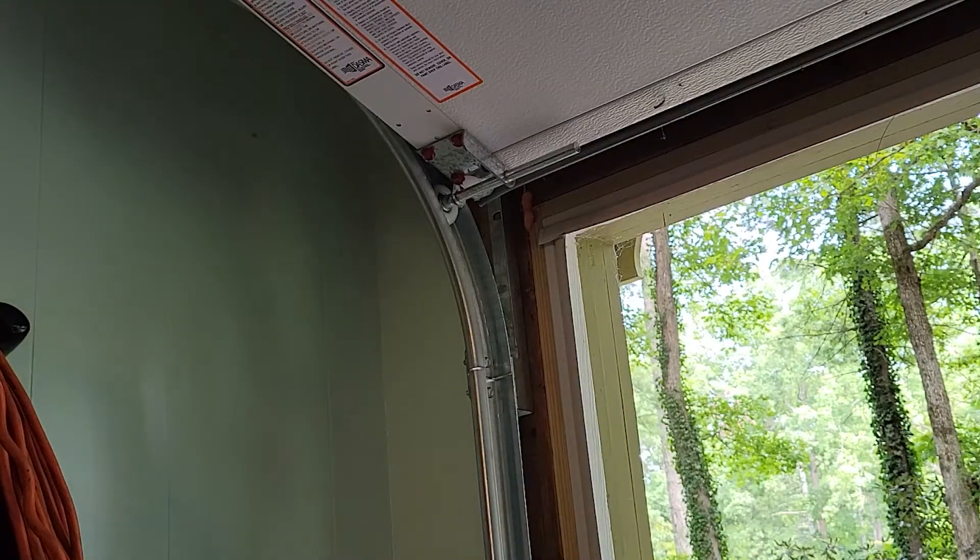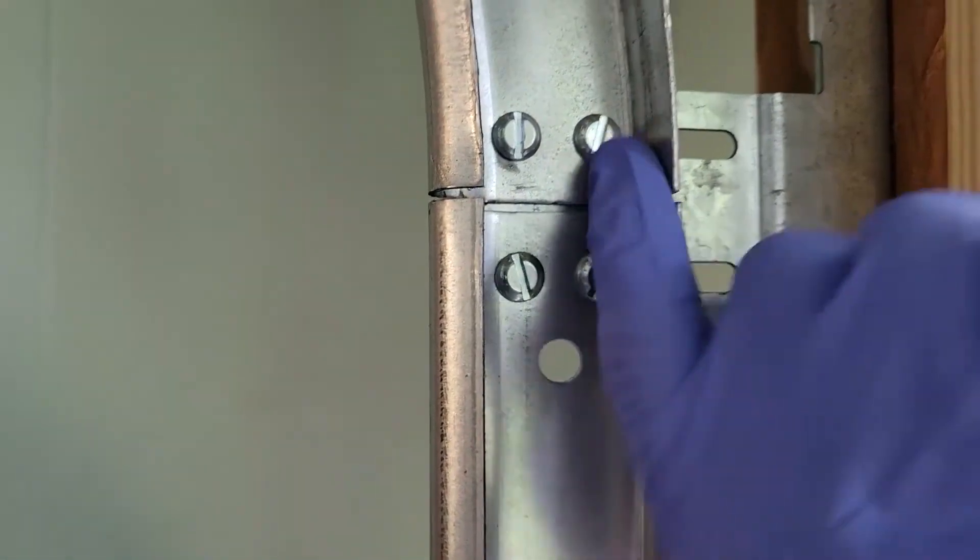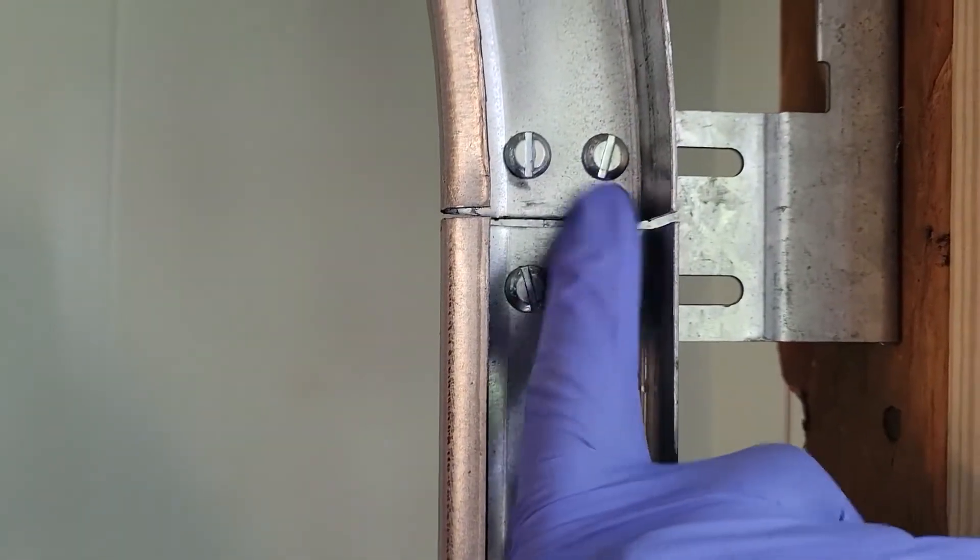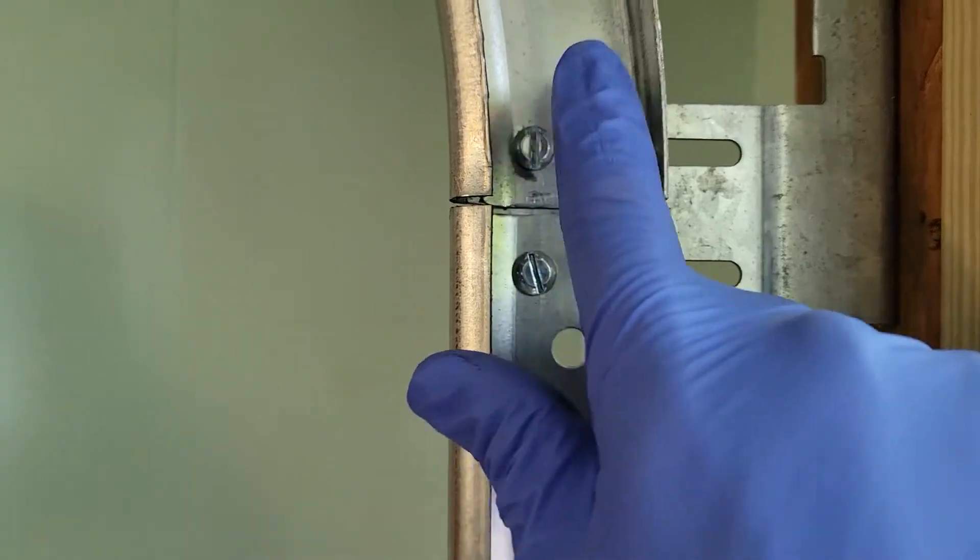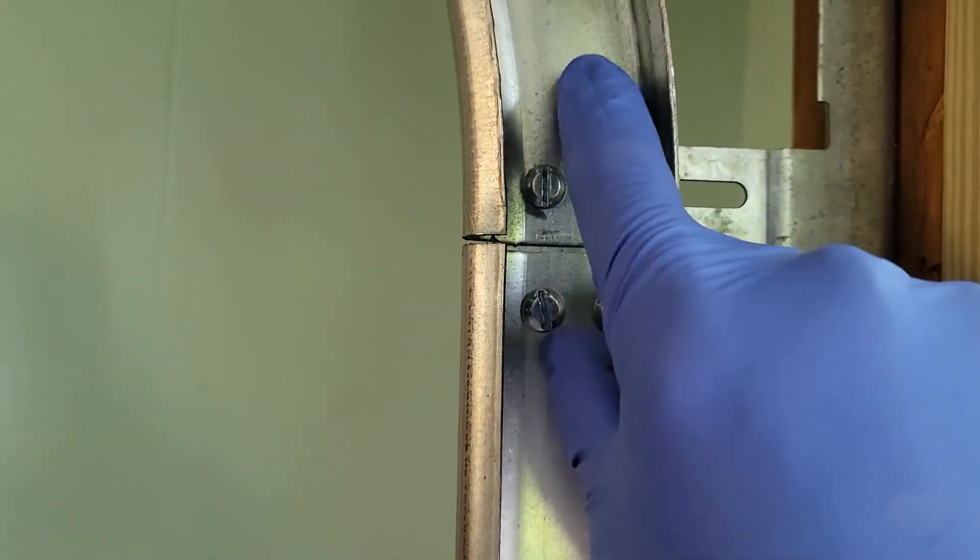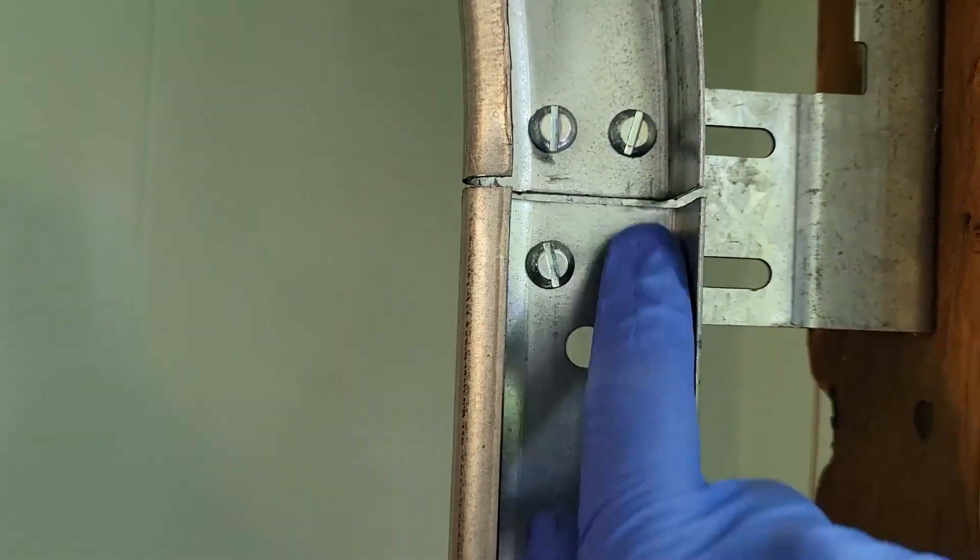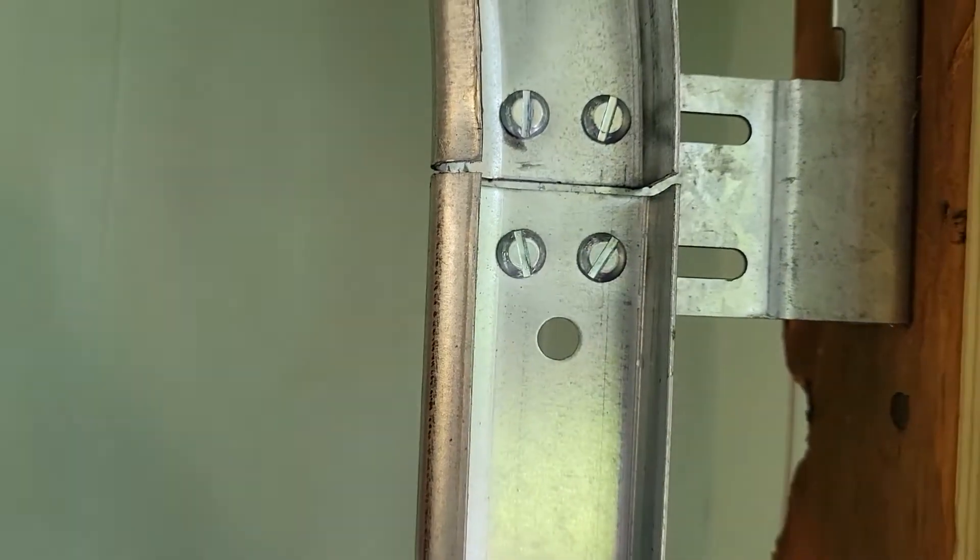Much smoother. Here's a close-up. Now it's flush on both ends, and that's what we want. We want that roller just to go past this smoothly as if there wasn't a break in the track.